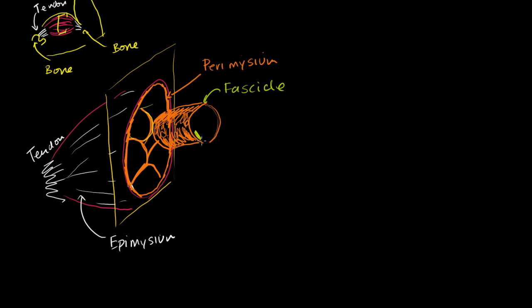The connective tissue inside of the fascicle is called the endomysium. So let me draw the endomysium — more connective tissue, it has capillaries in it, it has nerves in it, all of the things that have to eventually come in contact with the muscle cells. And each of these things inside the endomysium is an actual muscle cell.